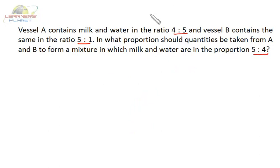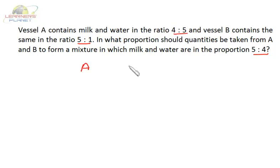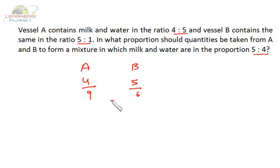Vessel A contains milk and water in the ratio 4 is to 5, and vessel B contains the same in the ratio 5 is to 1. In what proportion should quantities be taken from A and B to form a mixture in which milk and water are in the proportion 5 is to 4? We have three ratios here, so we take the milk proportion in each container. In vessel A, milk's proportion is 4 by 9. In vessel B, milk's proportion is 5 by 6. In the final mixture, milk and water should be 5 is to 4, meaning out of 9 parts, milk must be 5 parts — so it's 5 by 9.